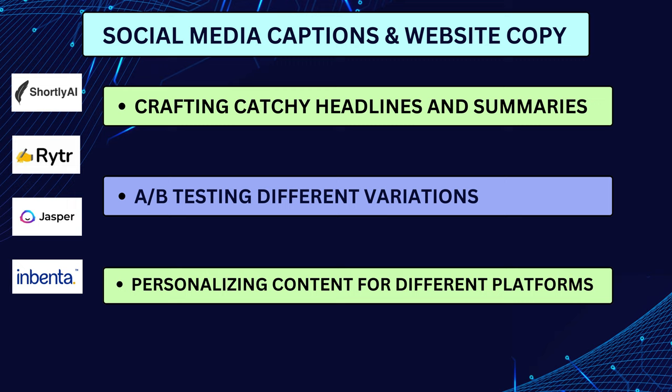Testing different variations: many AI tools like Jasper AI allow you to generate multiple variations of your content, enabling you to test and optimize for better engagement and clicks. Personalizing content for different platforms: explore platforms like Inbenta or Phrasee that can tailor your content based on specific social media platforms and audience demographics.